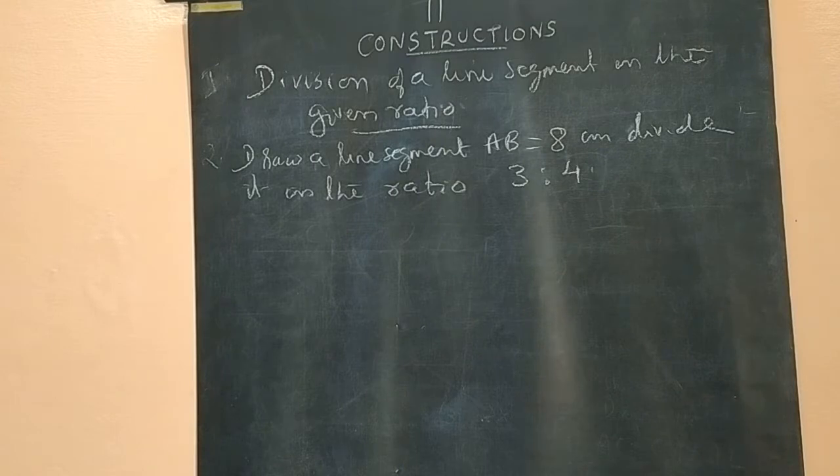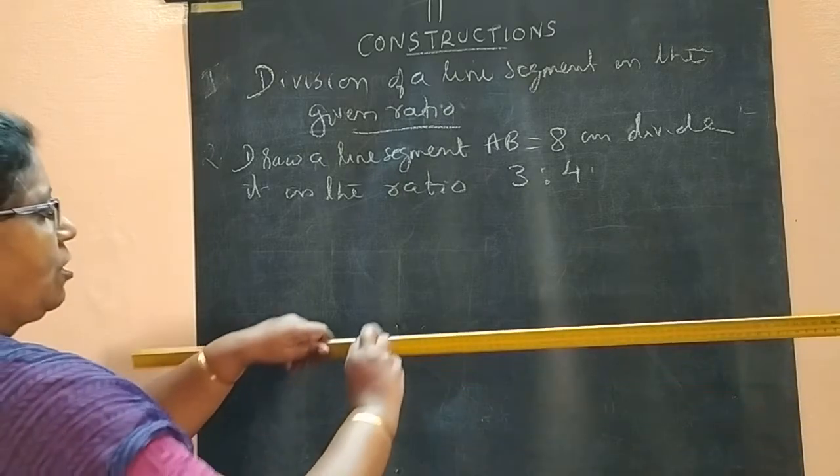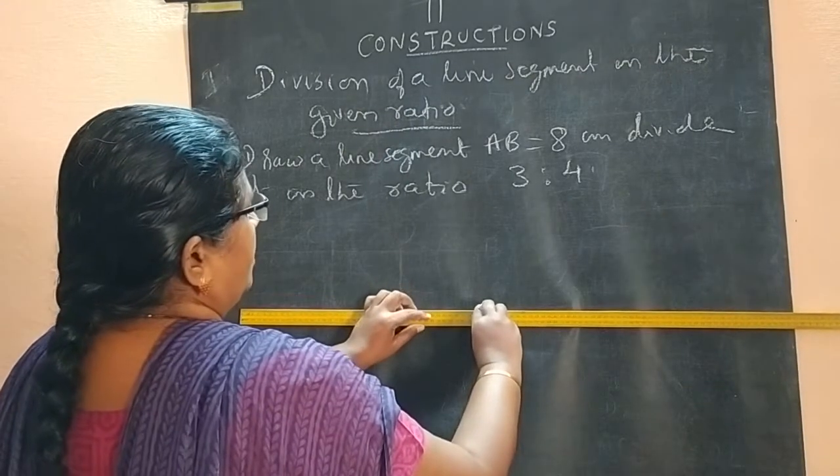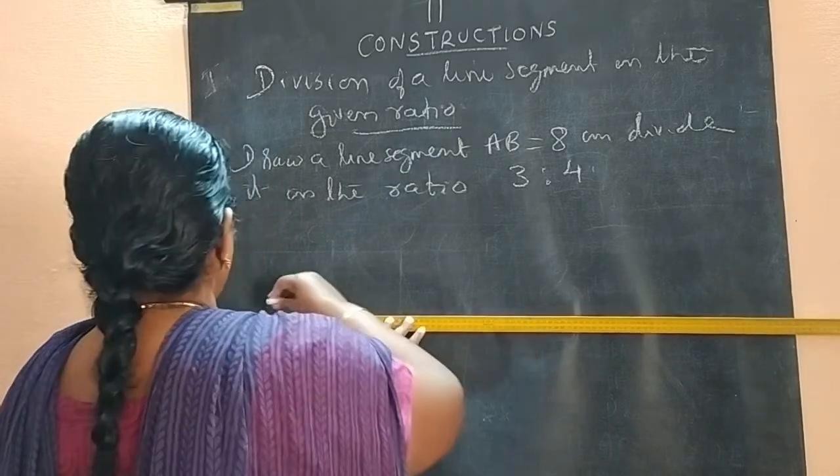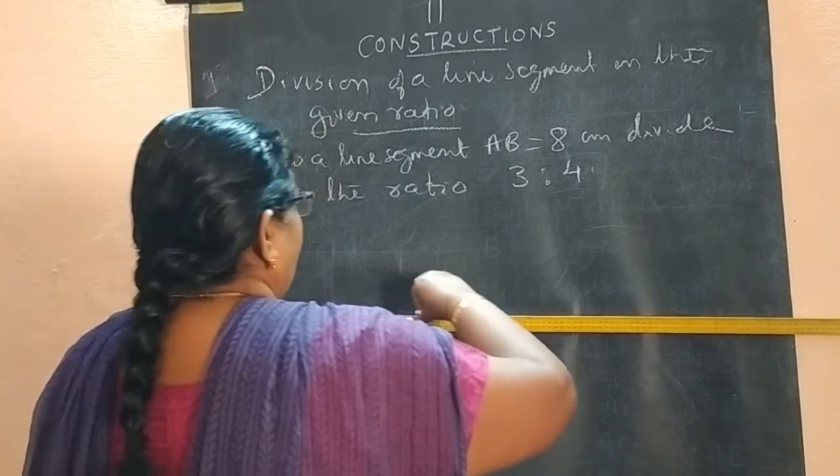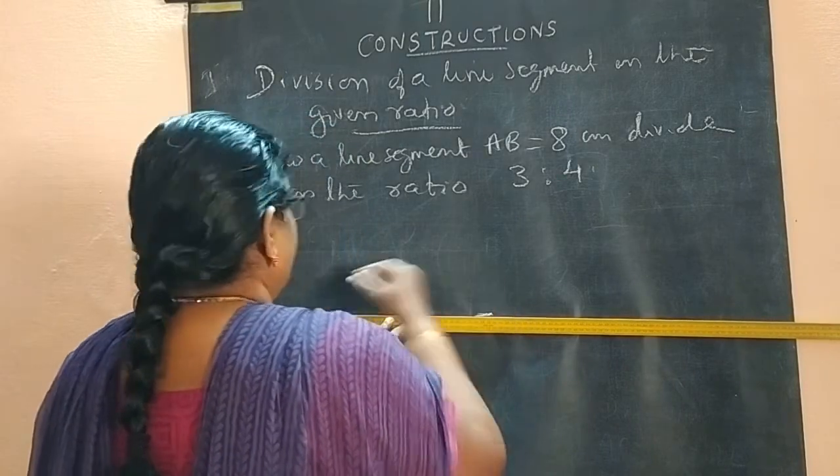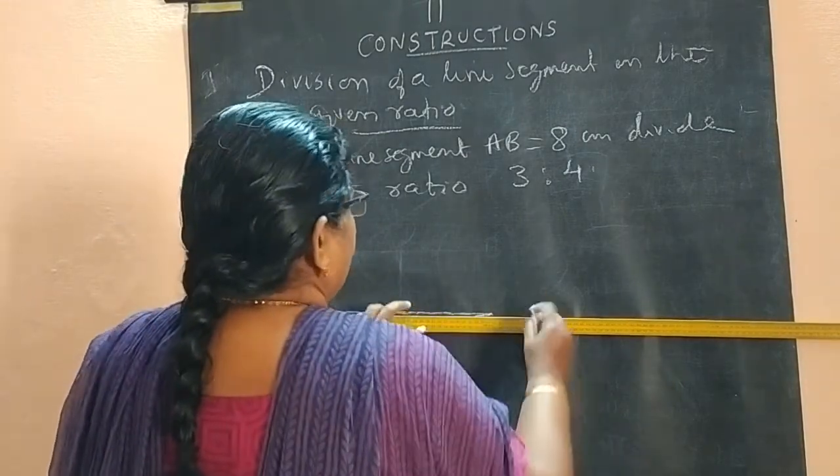So both the method I am going to show. First method is, first you draw AB equal to 8 cm. Draw AB equal to 8 cm.